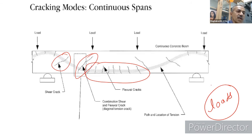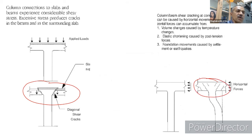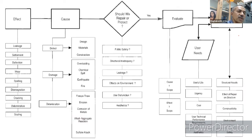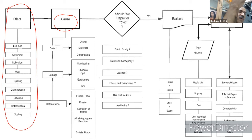Post-tension forces, foundation movements, and settlement also contribute to cracking patterns. In a repair strategy, once you observe visual distress, you must identify the cause — whether corrosion, exposure, applied loads, or something else. This is followed by evaluation testing to determine crack depth, assess repair options, and then analysis before proceeding with the actual repair.